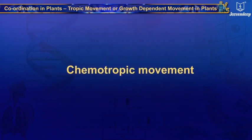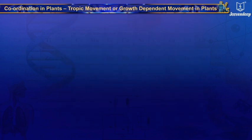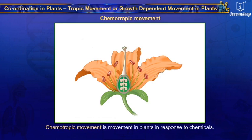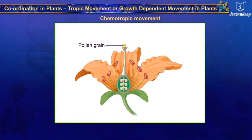Chemotropic movement is the movement in plants in response to chemicals. The growth of the pollen tube towards the ovules is an example of chemotropic movement.